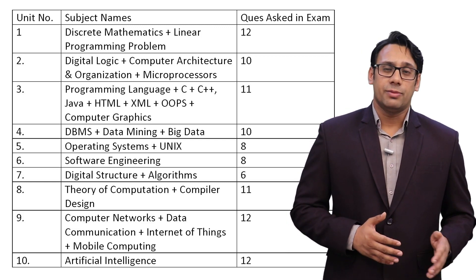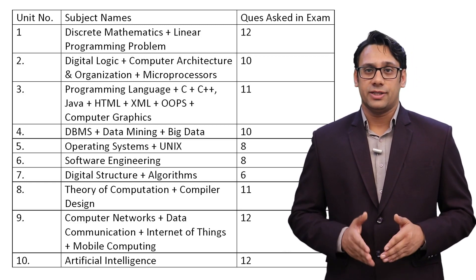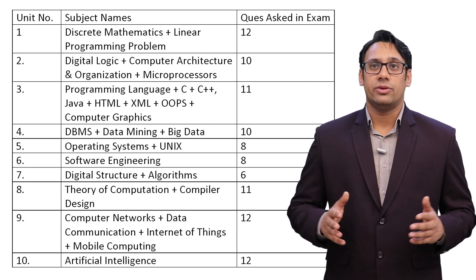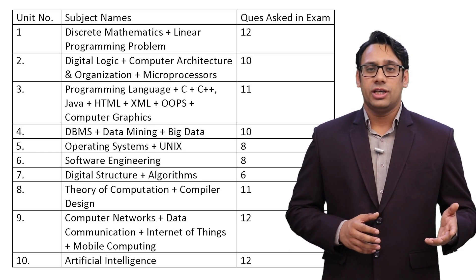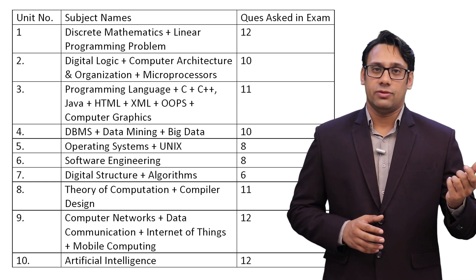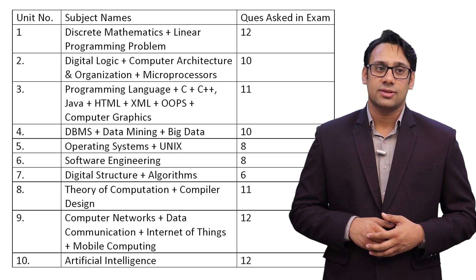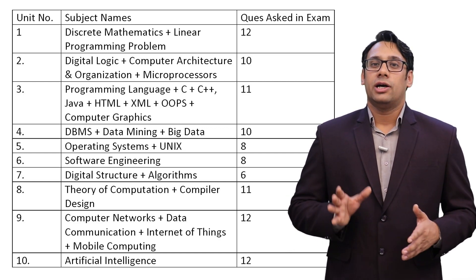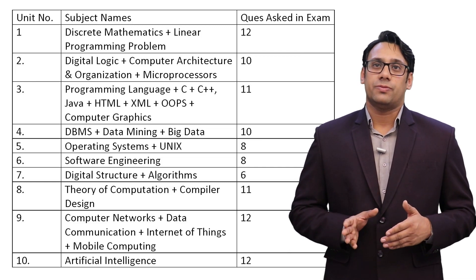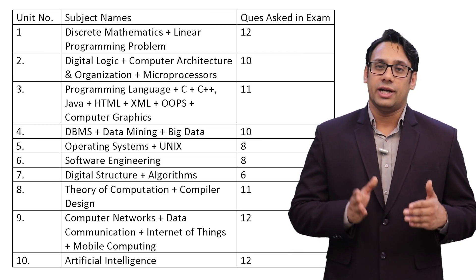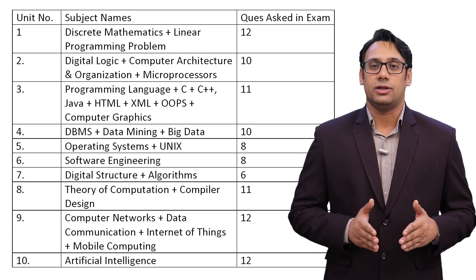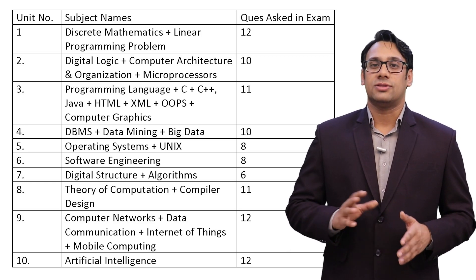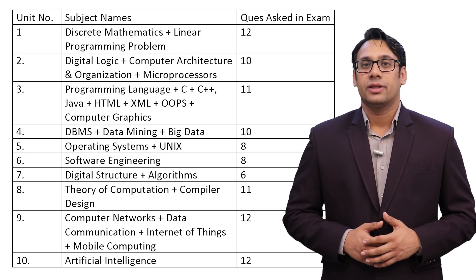Unit 4 is Database Management System and Data Mining and Big Data — a total of 10 questions. DBMS accounts for 8 questions, while Data Mining and Big Data account for only 1 question. In Unit 4, spend 80 percent of your time on DBMS and the remaining 20 to 30 percent on NoSQL, Data Mining, and Big Data.